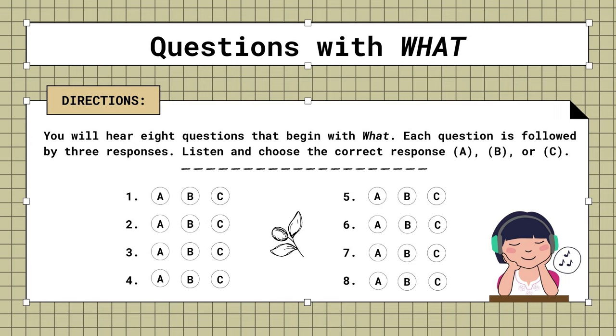7. What will the transportation cost? A. It's on the coast. B. No, it's not lost. C. It won't be cheap.